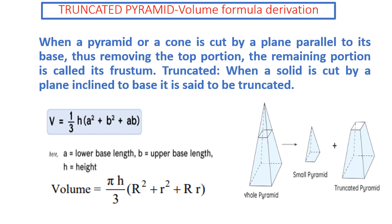Truncated Pyramid. A truncated pyramid is when a solid is cut by a plane inclined to the base, it is said to be truncated. The formula will be one-third h times (A squared plus B squared plus AB), or simply volume equals pi h over 3, times the quantity (R squared plus r squared plus R times r).